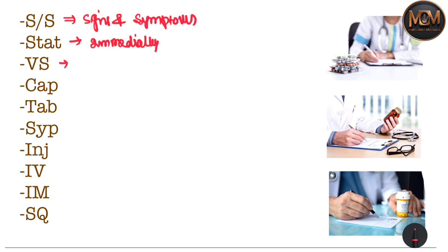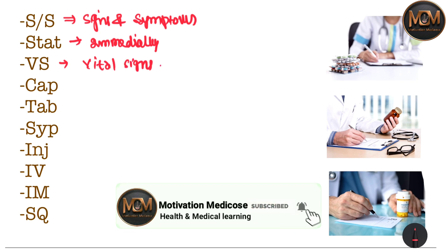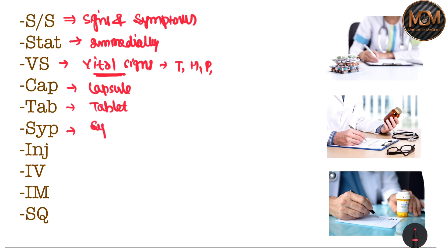VS means vital signs — things like temperature, heart rate, and pulse rate. We have also made a separate video on vital signs, so you can check the link in the description. CAP means capsule, TAB means tablet, SYP means syrup, and INJ means injection.